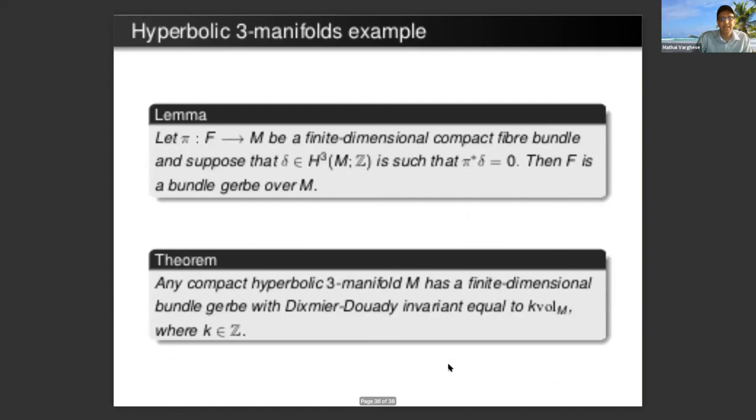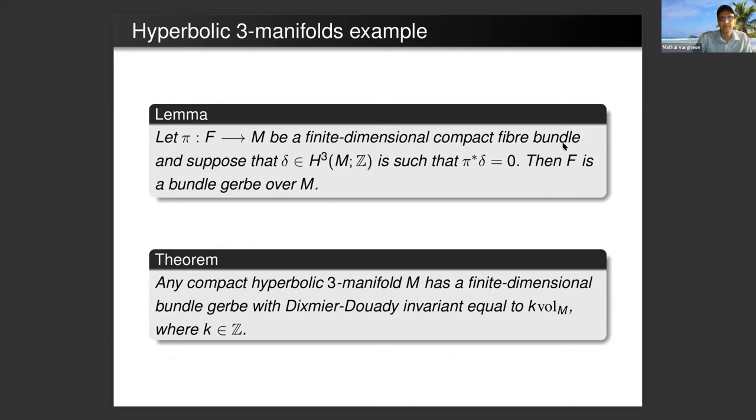The argument is completed by the following lemma which says that if you have a finite dimensional compact fiber bundle and suppose that δ is a degree 3 class on M such that the lift of δ to the total space F is zero, then F is a bundle gerbe. This is a simple exercise. With this we conclude that any compact hyperbolic 3-manifold has a finite dimensional bundle gerbe with Dixmier-Douady invariant equal to k times the volume for any k an integer, and we can apply our projective index theorem to this.